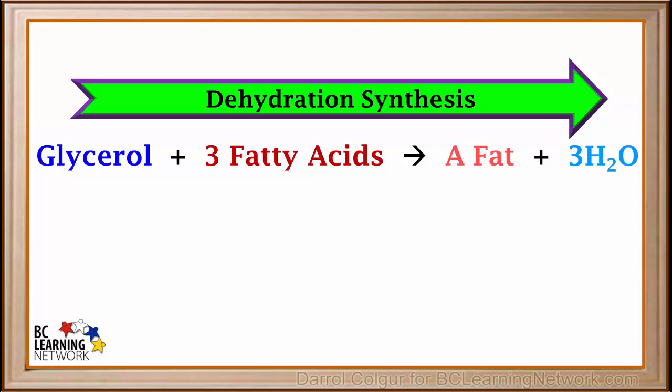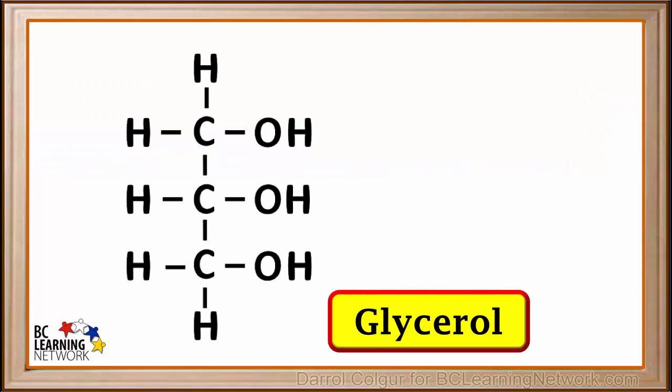Let's take a more detailed look at this process. Here's a molecule of glycerol, which can be called glycerin or propane-1,2,3-triol. Notice it has three carbon atoms, each with an OH group attached to it.